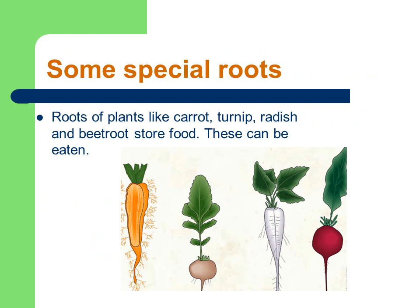Now some special roots. Roots of plants like carrot, turnip, radish and beetroot all store food, and that's why we can eat them.